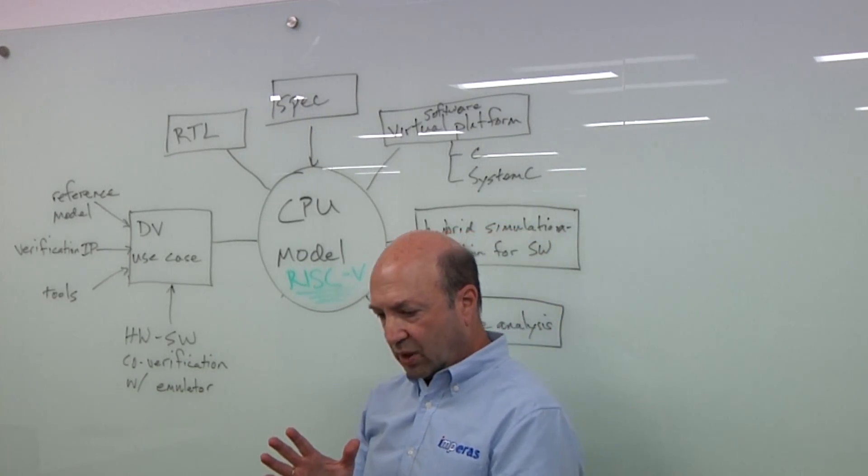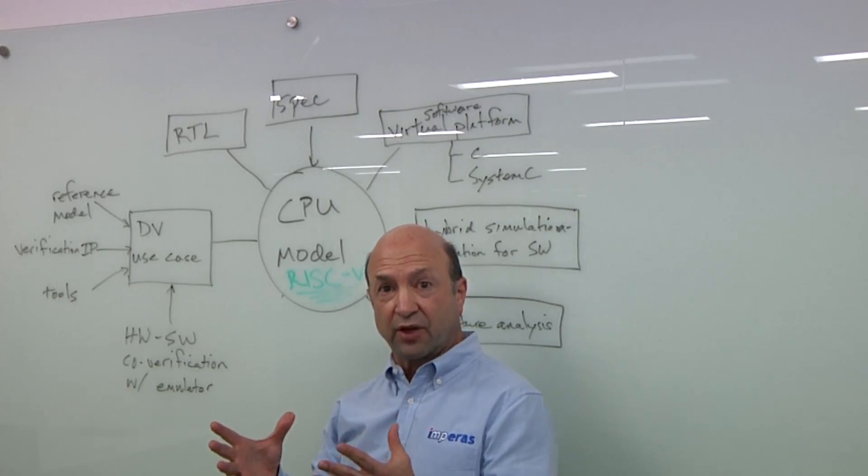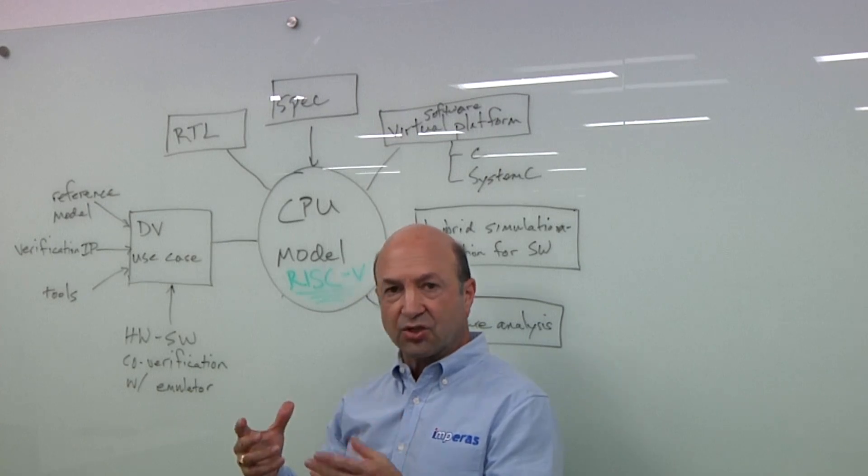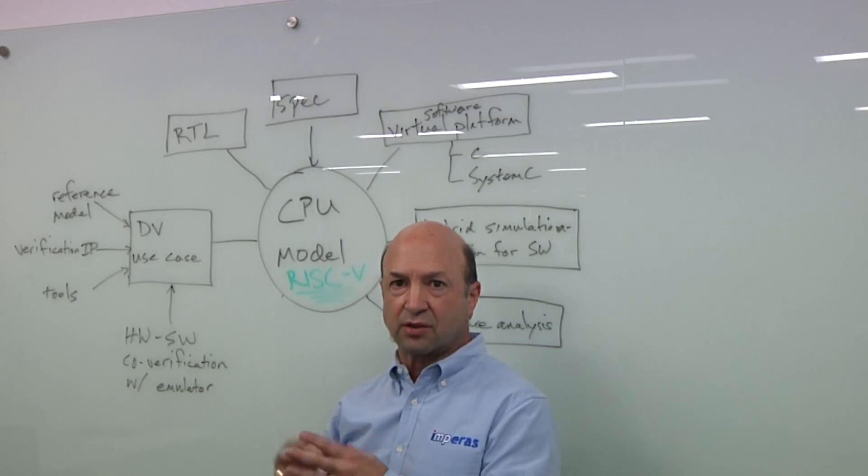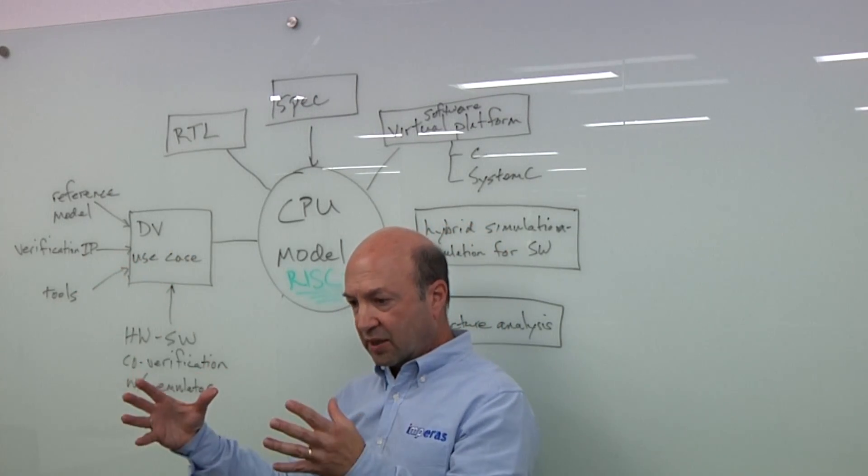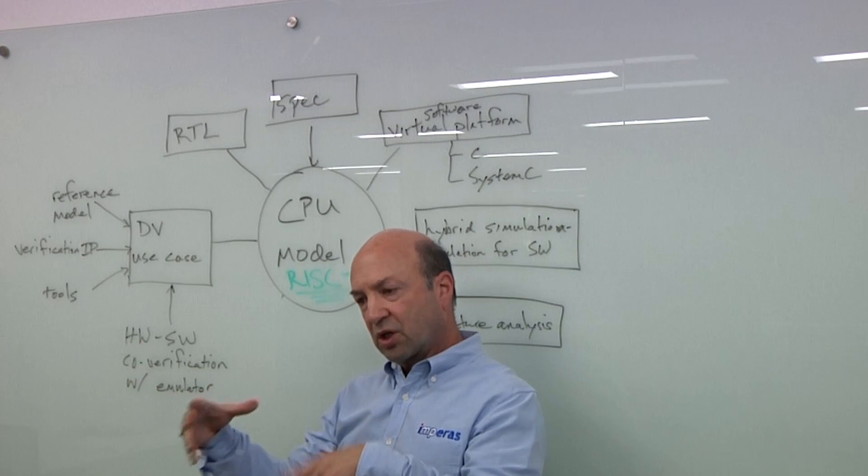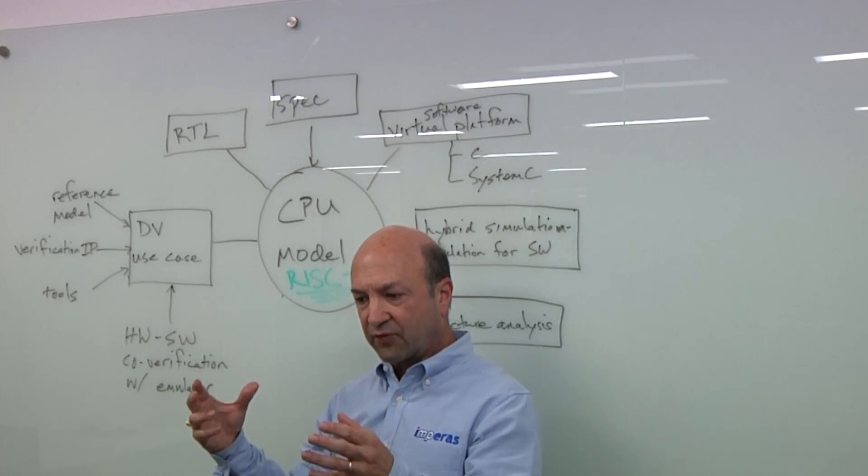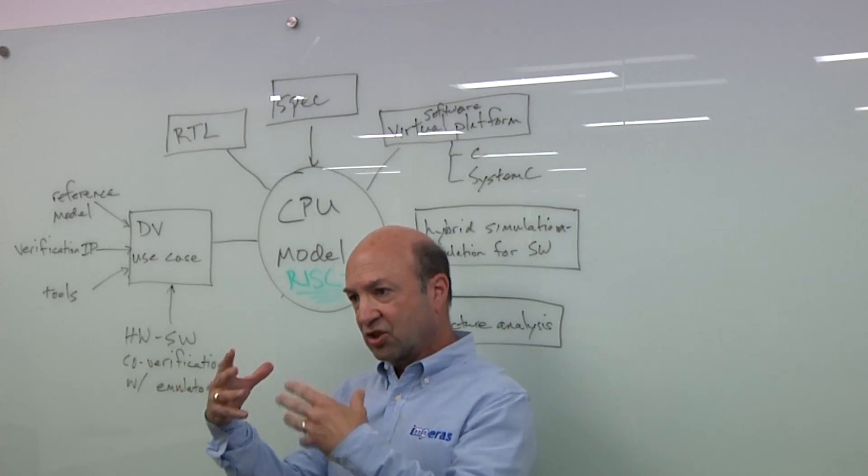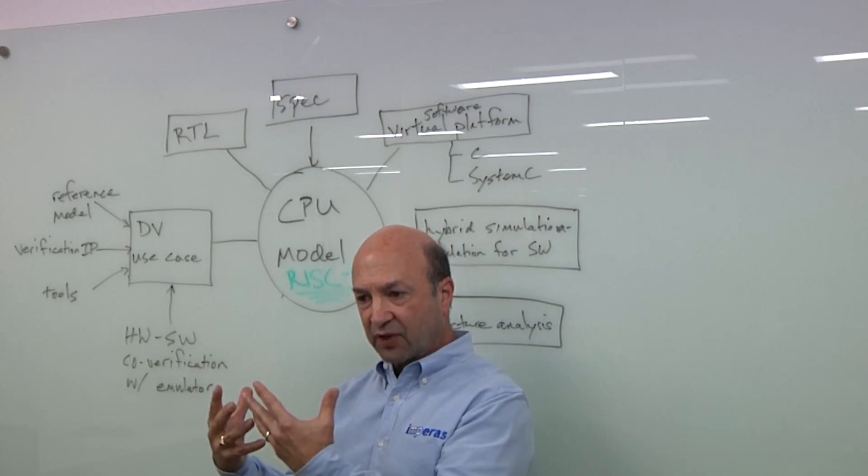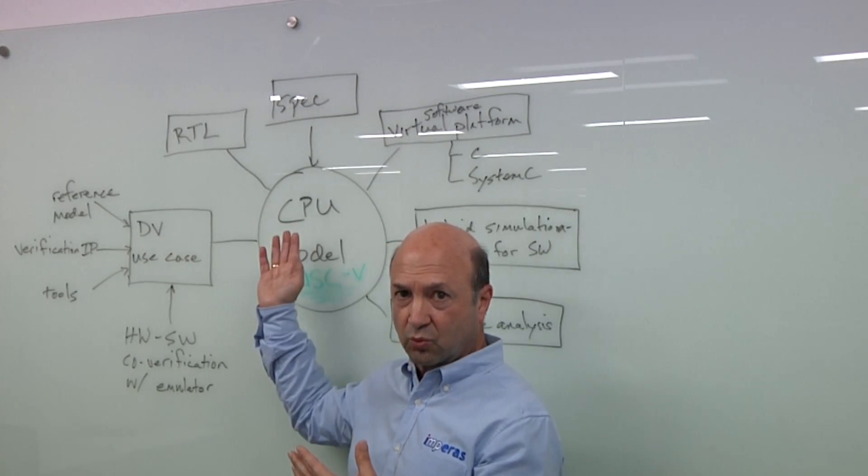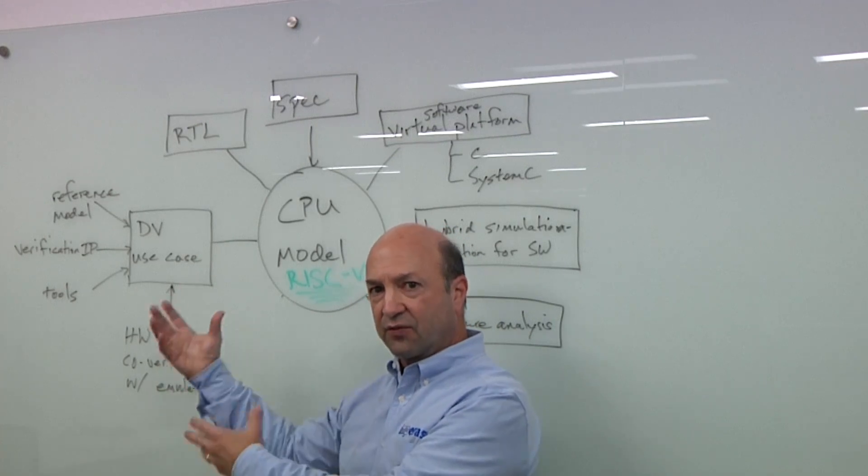With the verification IP, what we're used to with verification IP is that it's used for verification of buses, of NOCs, of peripherals. Here, we're talking about verification IP to actually set up the verification environment because what we're doing with processor verification is having a step-and-compare environment. And to do that step-and-compare, we need to have this verification IP that coordinates the reference model, this RISC-V CPU model, and the RTL, the device under test.